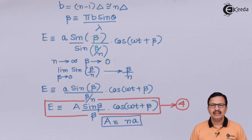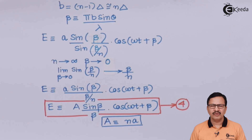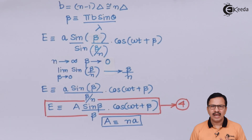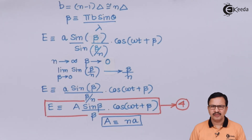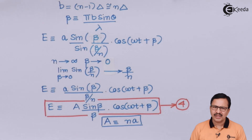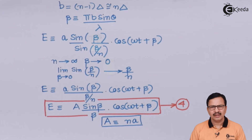In this video we started with a single slit, divided it into Huygens secondary wavelet sources, considered the contribution of each diffracted ray at point P on the screen, and finally obtained the expression for the electric field at point P. Thank you students for watching. Stay tuned to Ekida and do subscribe to our channel.